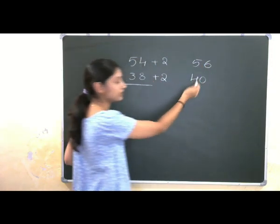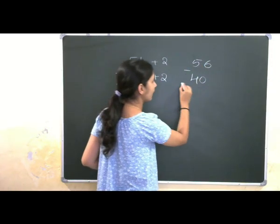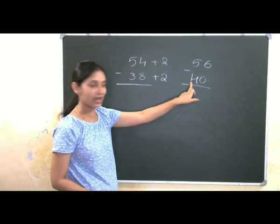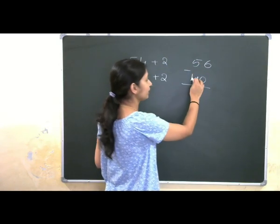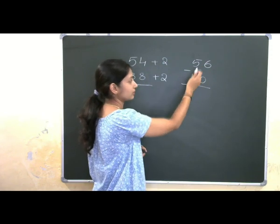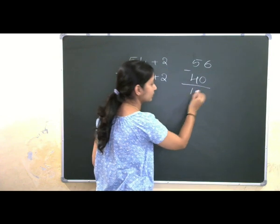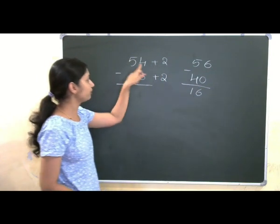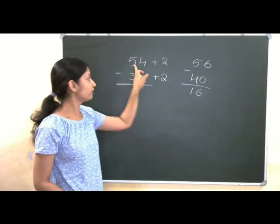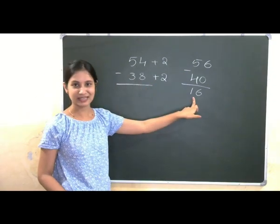Our new sum is 56 and 40. We need to subtract. So, it is now very easy to add. Subtract this to 40, 16 extra. 40 plus 10 plus 6. That gives you 56. So, 16 is our answer. If you do 54 minus 38 also, you will get 16. So, 54 minus 38 is 16.